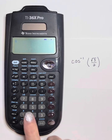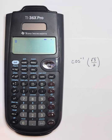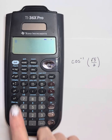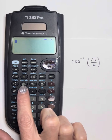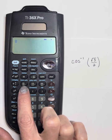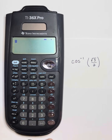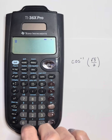Finding the inverse just means we're finding the angle whose cosine is square root of 3 over 2. On each of those trig buttons, underneath the first function is the inverse function. Since it's on the button and not blue above the button, we don't need to use the second key.